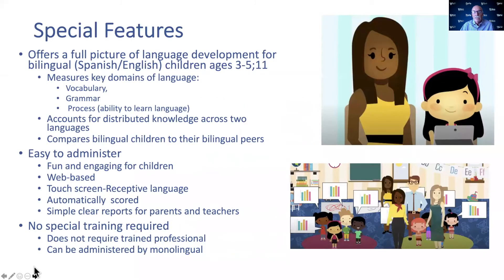There are several special features about the QUILS ES. First, it offers a full picture of language development for bilingual Spanish-English children ages 3 to 5'11. It measures key domains of language: vocabulary, grammar, and process — or the ability to learn language.